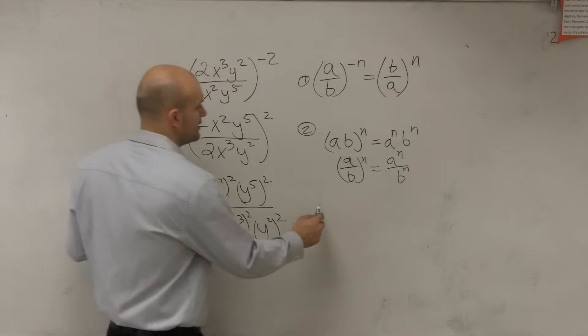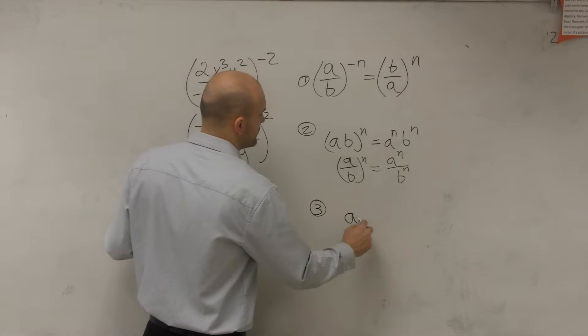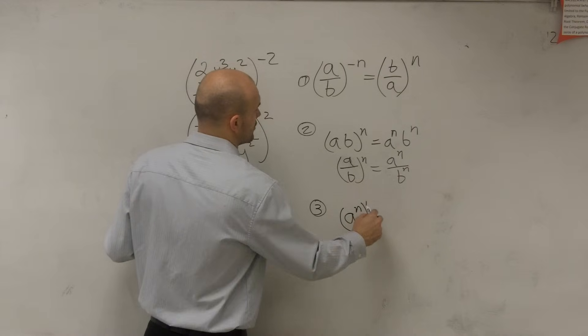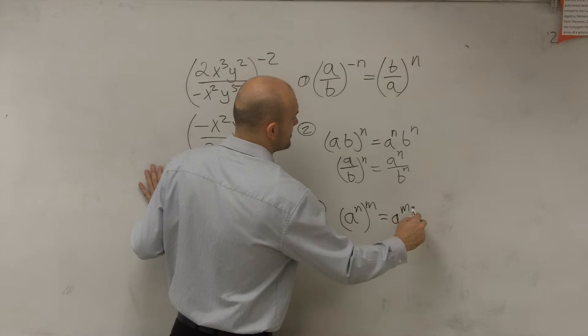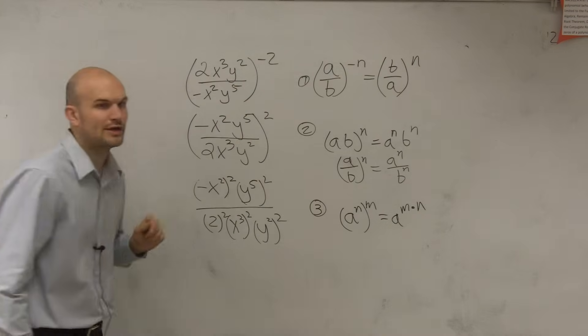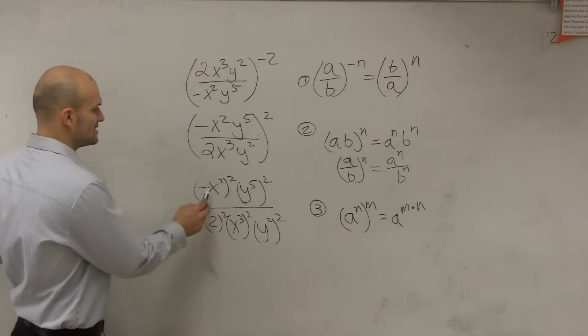Then the third one is you're going to use the power-to-power rule, which states if you have a raised to an exponent raised to an exponent, then that simply means a to the m times n. So now you're going to multiply the two powers.